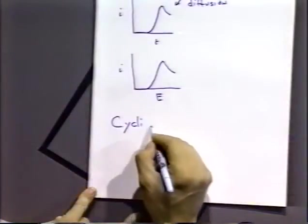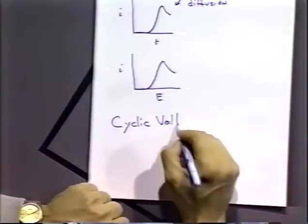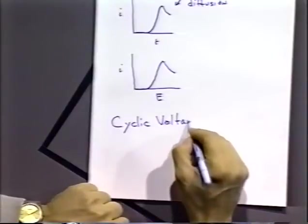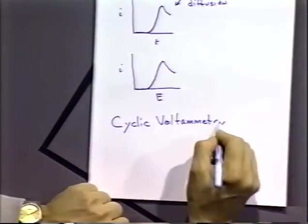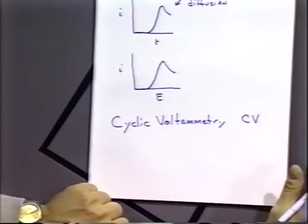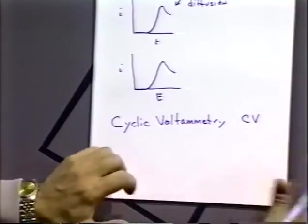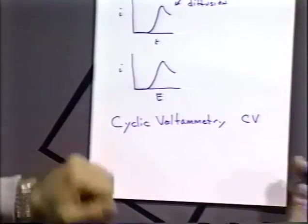Cyclic voltammetry is a variation of linear sweep voltammetry in which we just do an experiment. Almost everybody will say 'CV' — for a cyclic voltammogram or cyclic voltammetry — so you'll hear: 'I did a CV,' 'what does the CV look like?' That's the lingo.